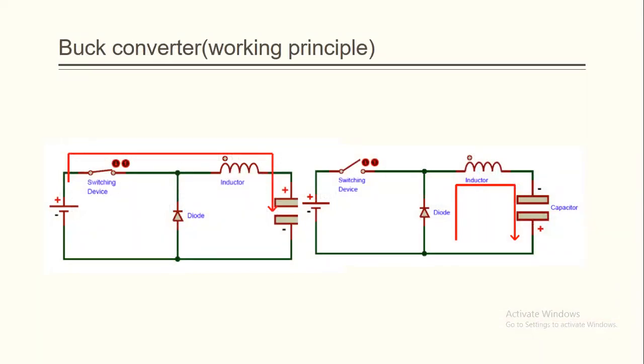So, how is the working principle of a buck converter? First of all, we have two ways, the on and off. When the switch is turned on, it will charge the LC circuit. But when the switch is turned off, the voltage across the inductor charges the capacitor and powers the load.